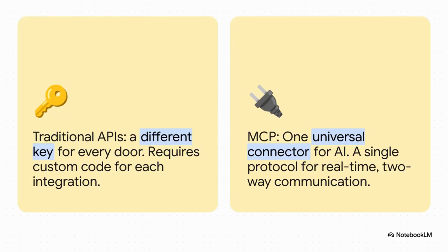The old way, with traditional APIs, was like needing a totally different, custom-made key for every single door you wanted to open. It was complicated, expensive, and a huge headache. MCP, on the other hand, is like the USB-C port for AI. It's one universal connector that just works, allowing for real-time, two-way communication without writing tons of custom code.